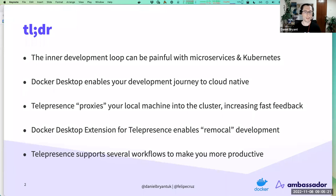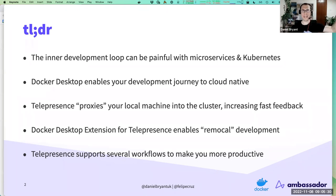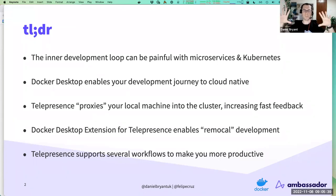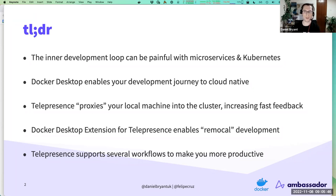The takeaway is that Docker Desktop and Telepresence are your path to production. As developers, we've got that business idea, KPIs, and experiments we want to run — we want to get to production with a fast feedback loop. Telepresence and Docker Desktop support several workflows: development today, but also CI/CD, testing, and all these tools reduce friction for cloud-native developers.